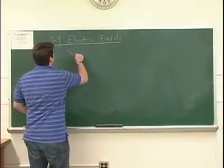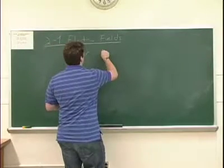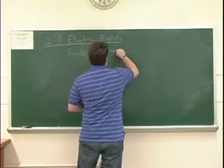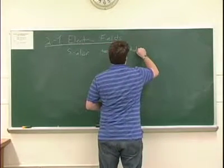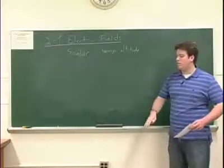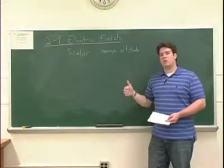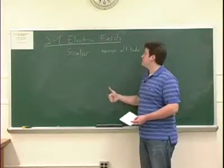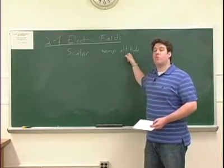The first is a scalar field. This is like temperature or, say, the altitude of a mountain or of a landscape above sea level. Well, a scalar field has one number assigned to every point in space. There's one temperature for every point. There's one altitude for every point.